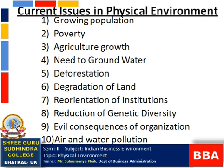Take the example of water. People are doing everything in one river itself - they take bath there, wash their clothes there, and animals also bathe there. You might have seen such places. This leads to water becoming polluted. The third issue is agricultural growth, which is also one of the factors affecting the physical environment.